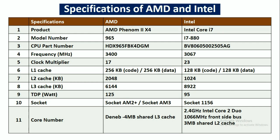The core for AMD processor is Deneb with 4MB shared level 3 cache. And for Intel, it is 2.4GHz Intel Core 2 Duo, 1066MHz frontside bus, and 3MB shared level 2 cache. So these are the specifications of AMD and Intel processor.